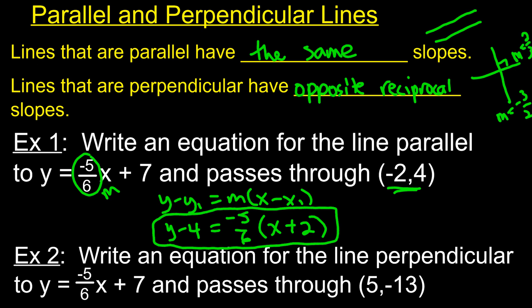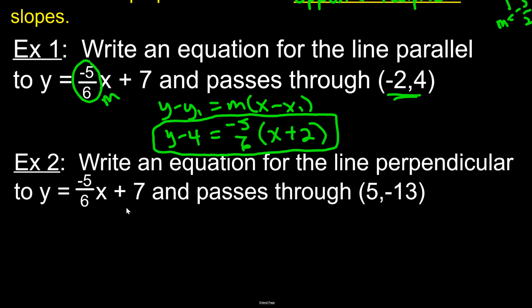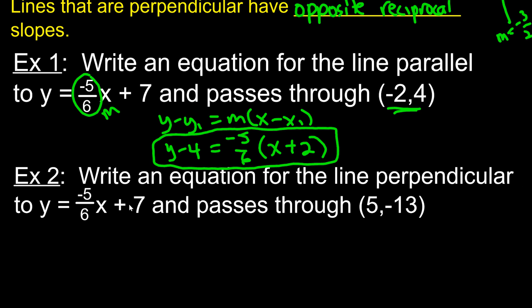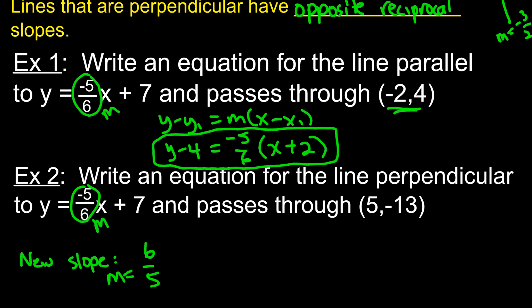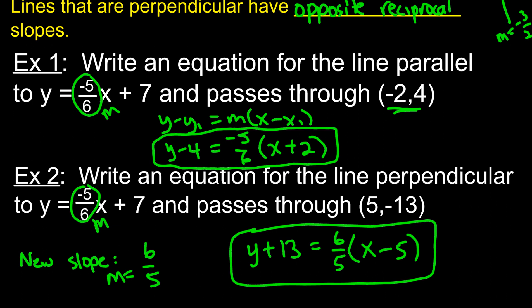Same idea for perpendicular: write an equation for the line perpendicular to y equals negative 5/6 x plus 7 that passes through (5, -13). The original slope is negative 5/6. For a perpendicular line, we take the opposite reciprocal — flip it to 6/5 and change the sign to positive. So the new slope is 6/5. Using point-slope form: y minus negative 13 — so y plus 13 — equals 6/5 times (x minus 5).